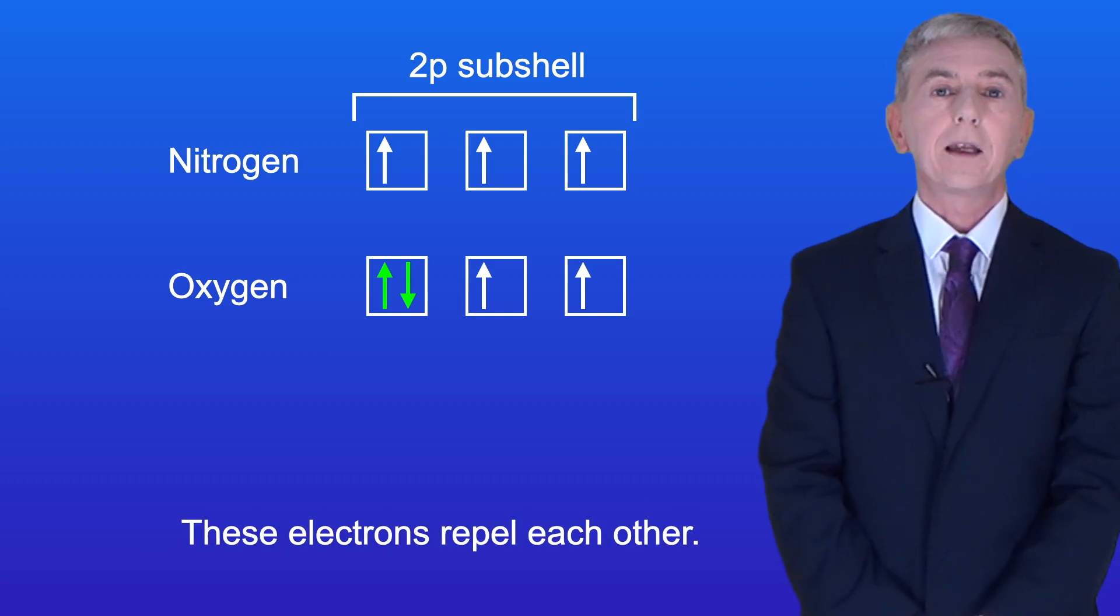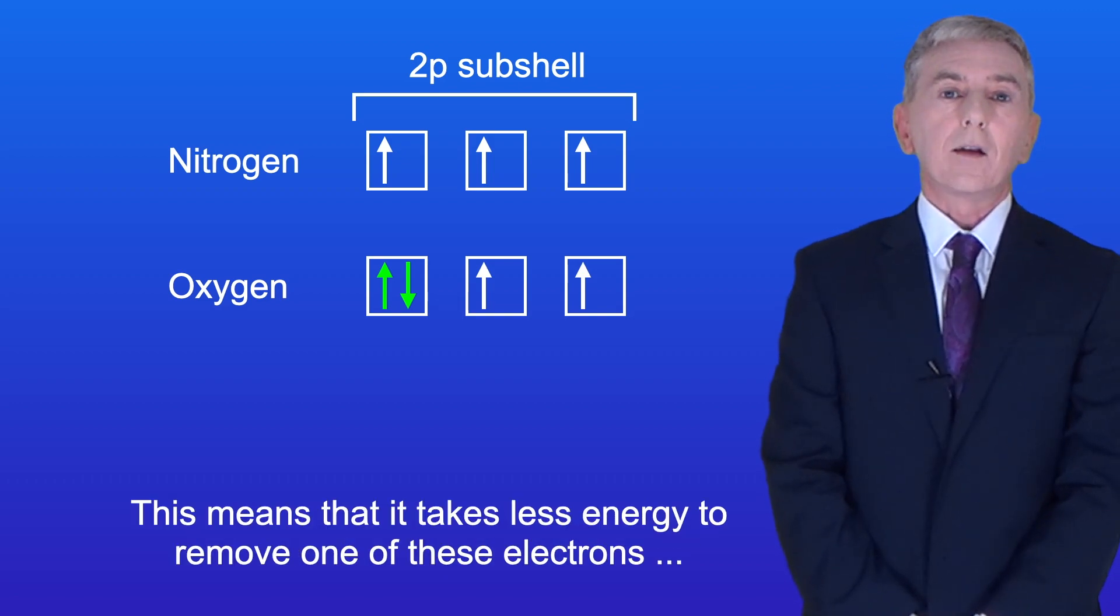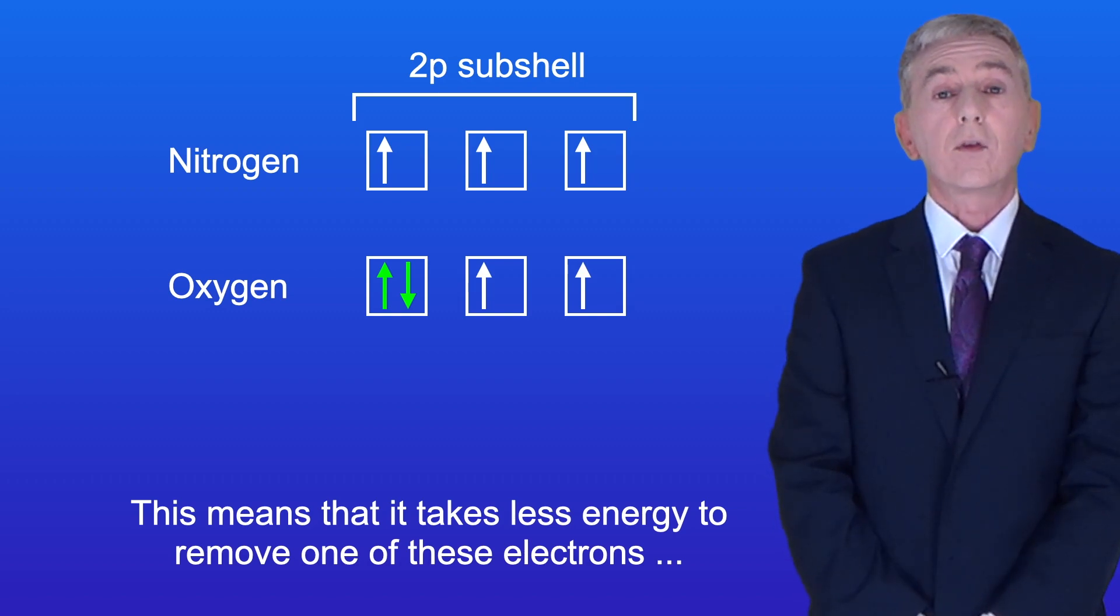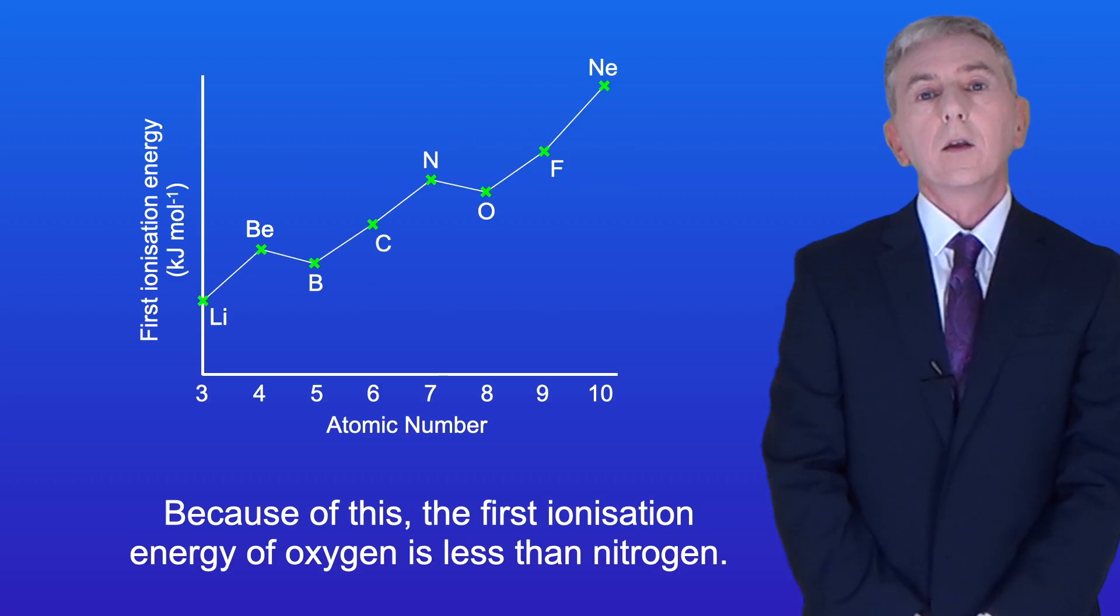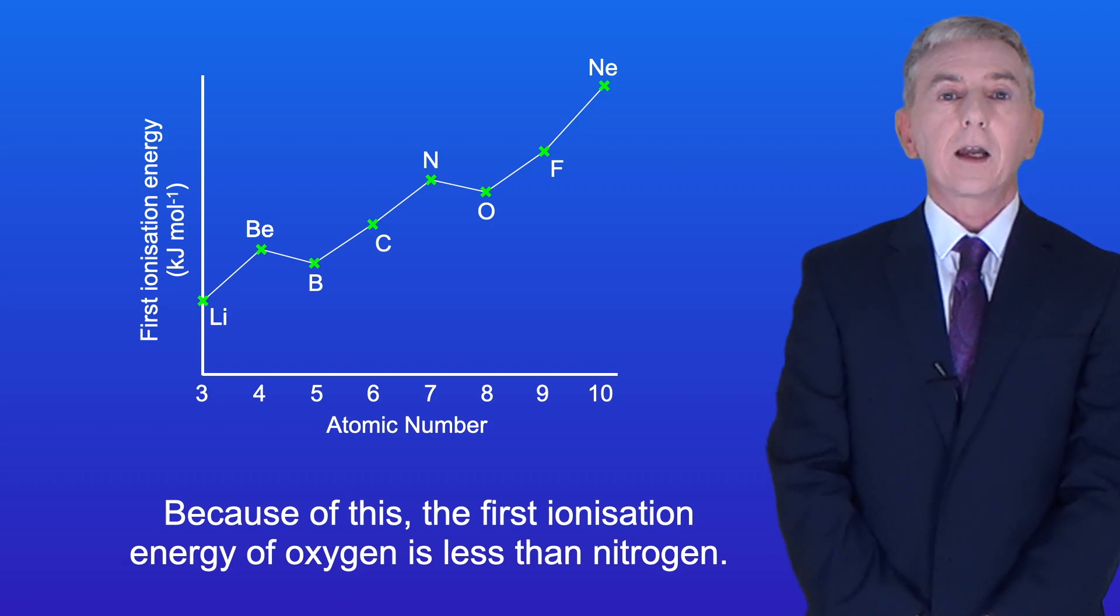These electrons repel each other. This means that it takes less energy to remove one of these electrons than if the electrons were in separate orbitals. So because of this the first ionization energy of oxygen is less than nitrogen.